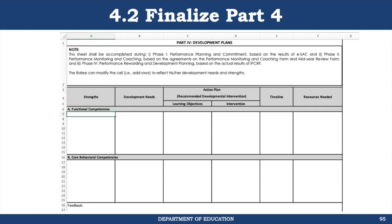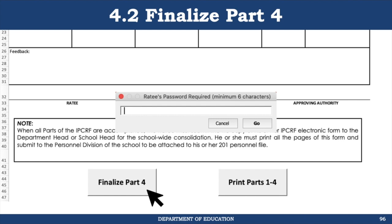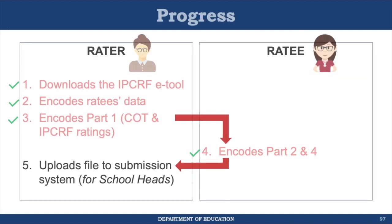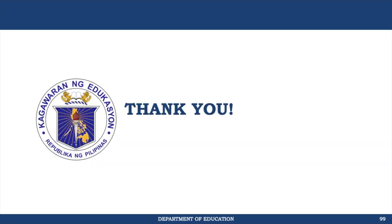This password will be used later in finalizing or unfinalizing Parts 2 and 4. After confirming the password, the ratee clicks the go button, which locks Part 2. You will confirm that Part 2 has been locked because the background color turns red. Finally, the ratee opens Part 4 and encodes his or her development plans. After encoding, at the bottom, the ratee clicks the finalize Part 4 button, which again prompts for the ratee's password set when finalizing Part 2. Click go and that locks Part 4. That finishes all the steps needed to accomplish the IPCRF electronic tool. The ratee then gives the file back to the rater or school head for online submission. That concludes my presentation. Thank you very much.